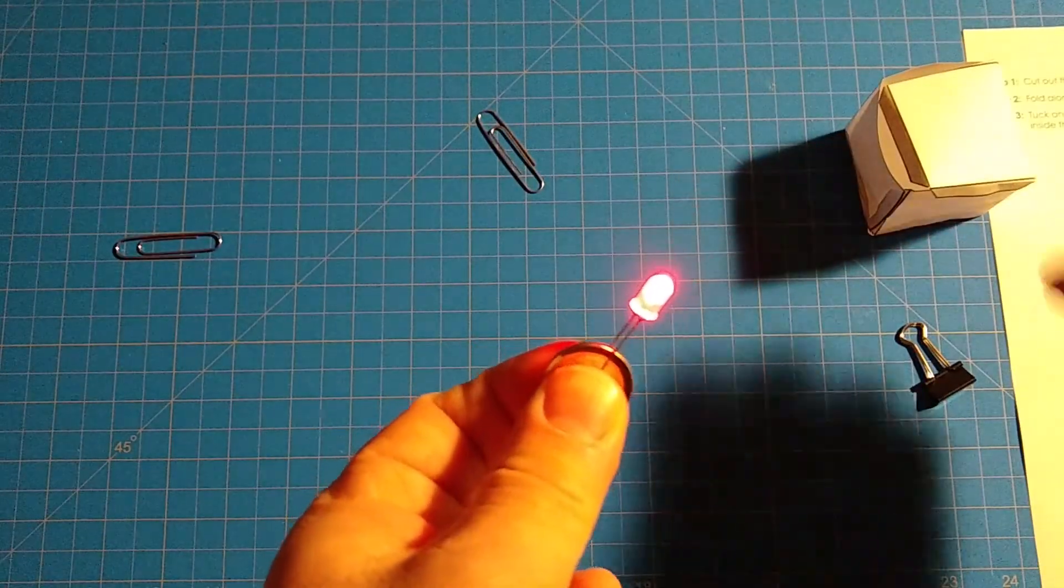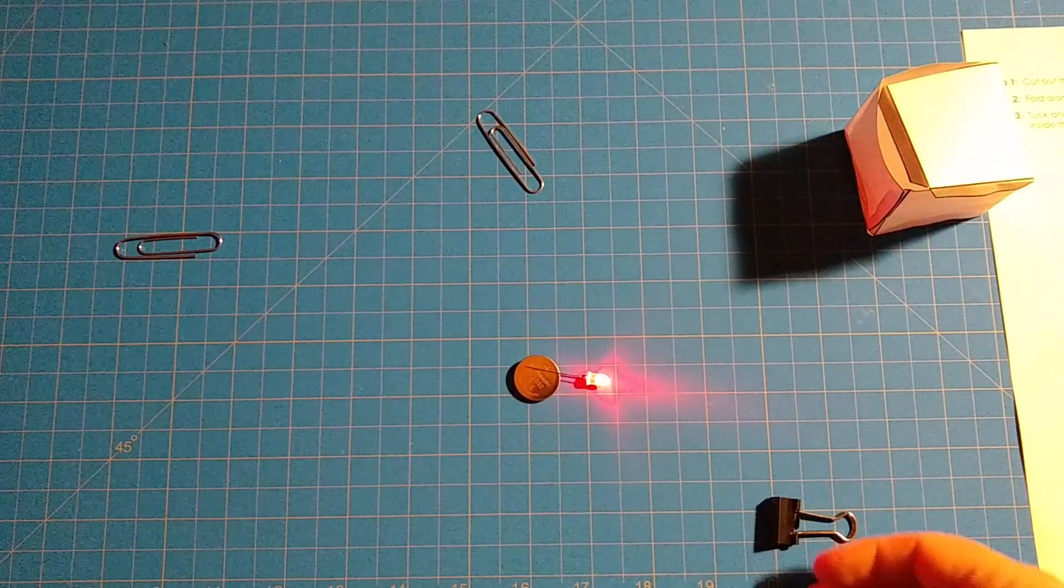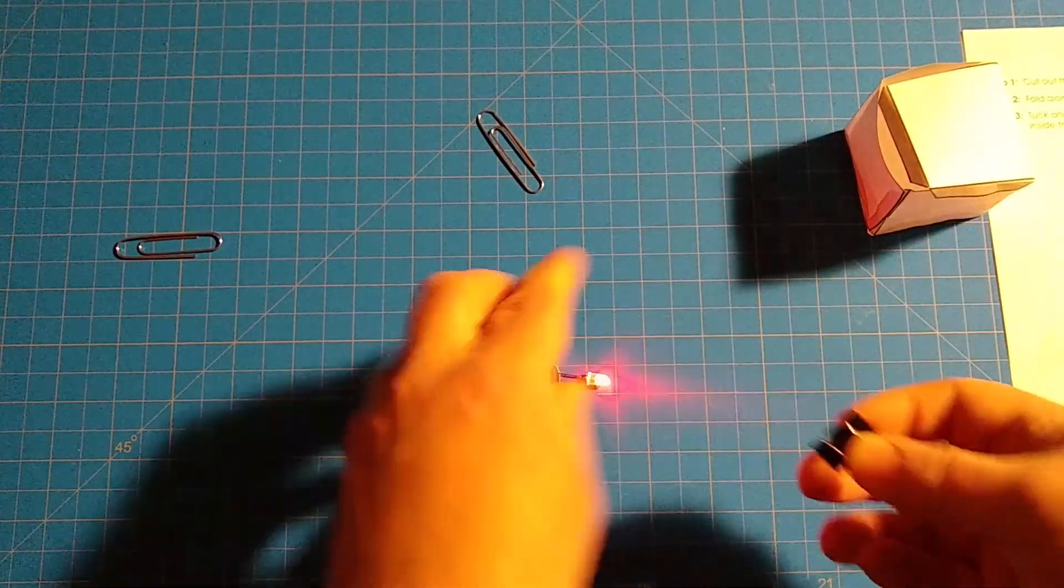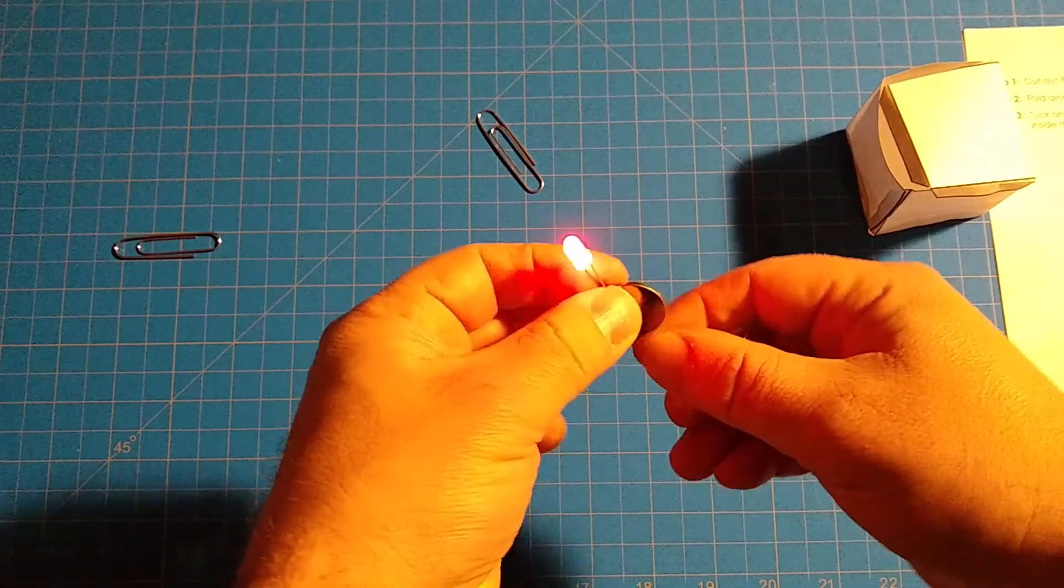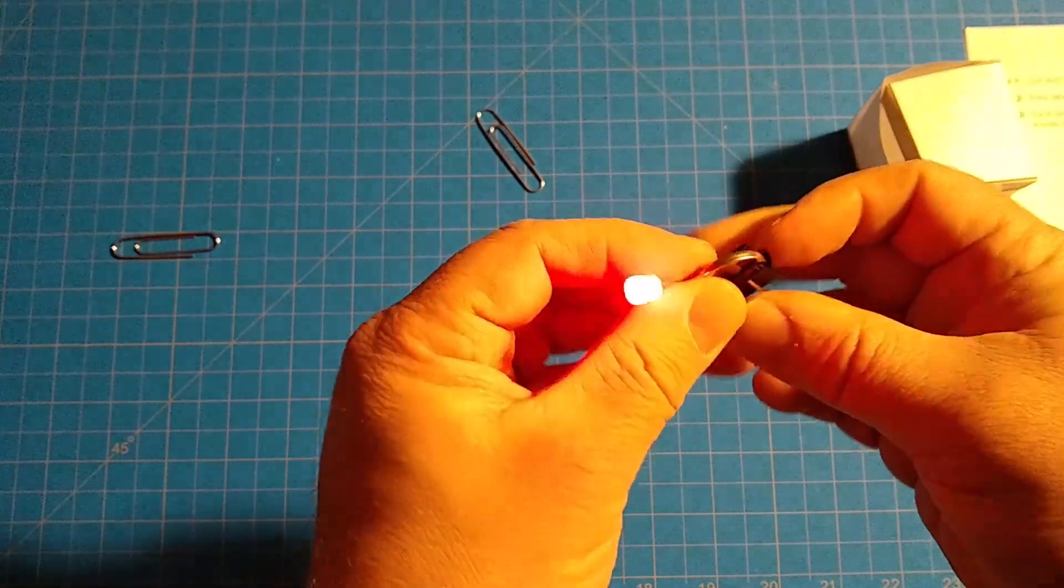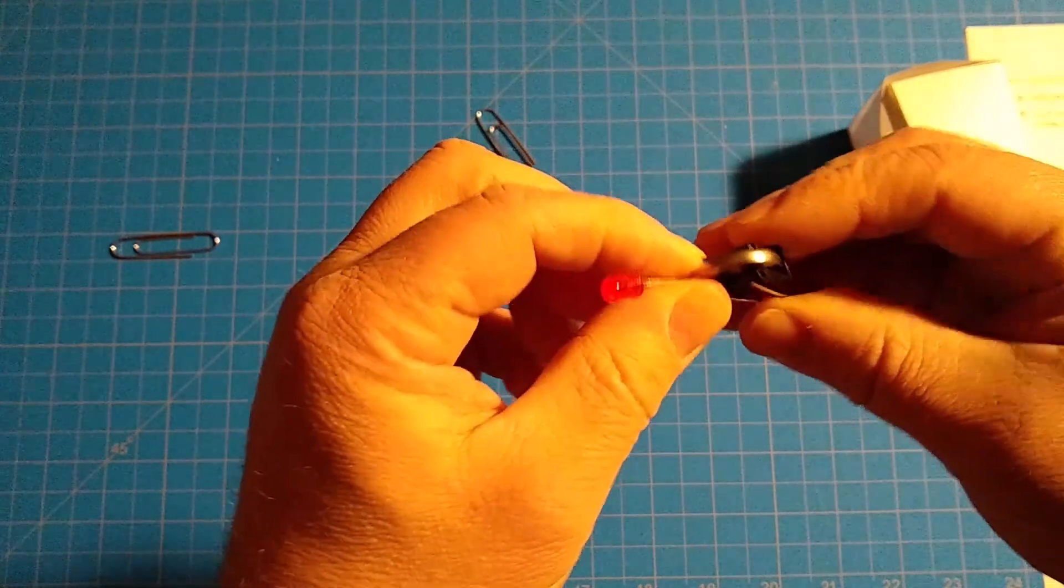Then what you can do is you can use your binder clip to clip these together. You could also use tape or something, but a binder clip is kind of a fun way to do it. Obviously do it the way you want and the way that makes most sense to you.